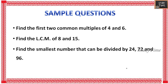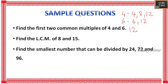Next sample question: find the first two common multiples of 4 and 6. Write the multiples of 4: 4, 8, 12… and the multiples of 6: 6, 12… The first common multiple is 12, and the second common multiple would be 24. So the first two common multiples of 4 and 6 are 12 and 24.